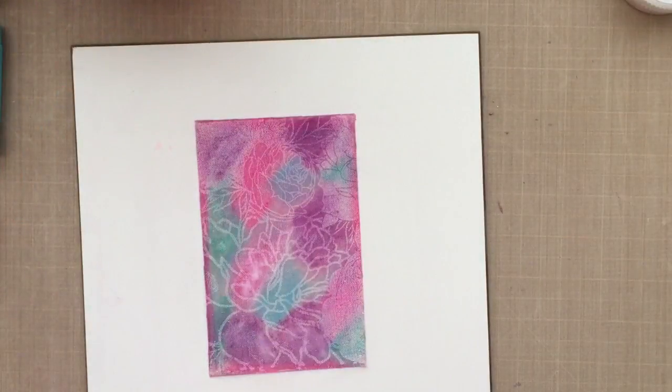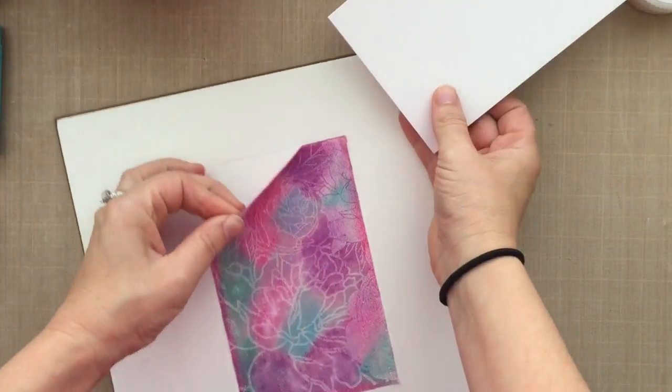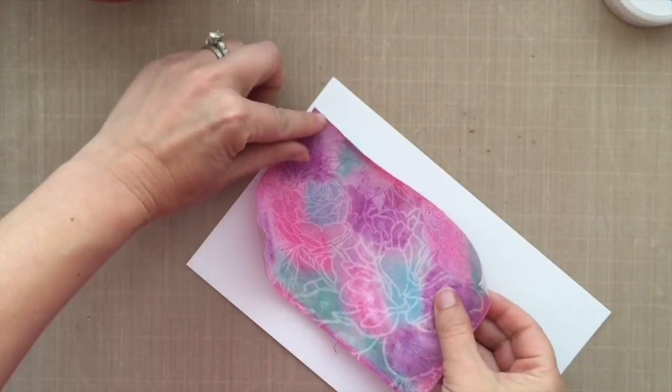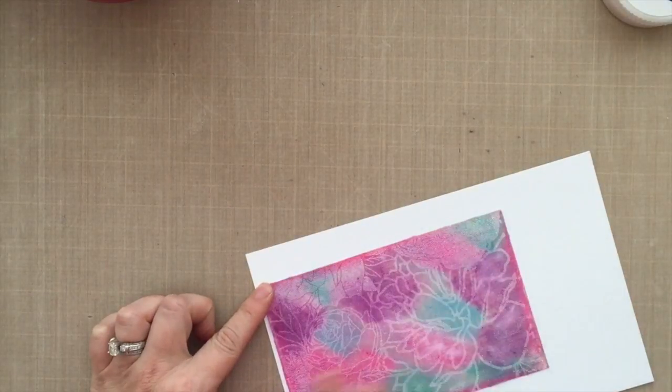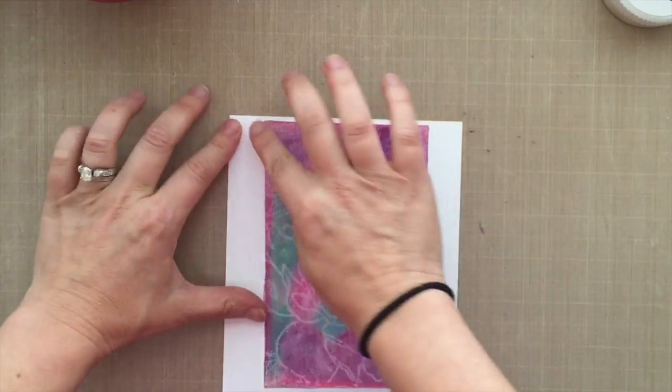Yeah, peeling up that sticky back canvas and I'm attaching it to just a white piece of scratch cardstock that I have. That's going to be my base for my frame, you know, because this is going inside a picture frame. But you could also do this for the front of your card.